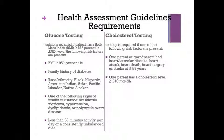Glucose testing is required if the patient has a BMI greater than or equal to the 85th percentile, plus two of the following risk factors: BMI at or above the 95th percentile, a family history of diabetes, the patient is Black, Hispanic, American Indian, Asian, Pacific Islander, or Native Alaskan, signs of insulin resistance, or less than 30 minutes of physical activity per day or a consistently unbalanced diet. Cholesterol testing is required if one parent or grandparent has had heart or vascular disease, a heart attack, heart death, heart surgery, or stroke before age 55, or one parent has a cholesterol level at or above 240 mg/dL. Glucose and cholesterol testing should be obtained fasting — defined as no food or beverage other than water for at least eight hours before testing.